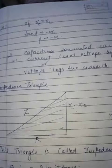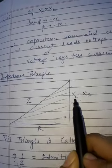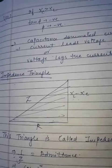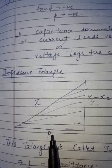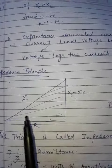Now what was XL minus XC? XL was the resistance of the inductor, XC was the resistance of the capacitor, and R was the resistance of the resistor. So this is a resistance triangle and its net is R.